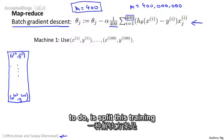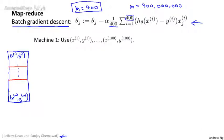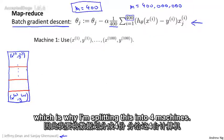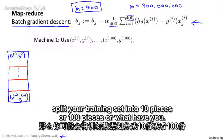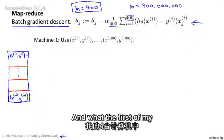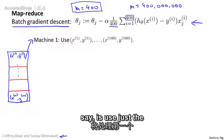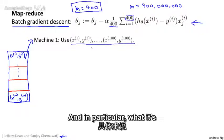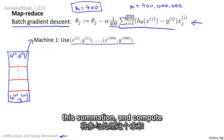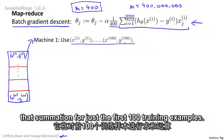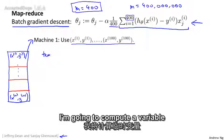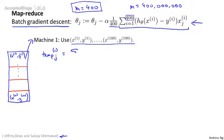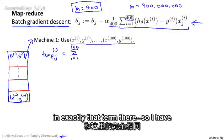In the MapReduce idea, I'm going to split this training set into different subsets. I'm going to assume for this example that I have four computers or four machines to run in parallel on my training set, which is why I'm splitting this into four pieces. If you have 10 or 100 machines, you would split your training set into 10 or 100 pieces. What the first of my four machines is going to do is use just the first one quarter—the first 100 training examples—and compute that summation for just those first 100 training examples. I'm going to compute a variable temp superscript 1 (the first machine): j equals sum from i equals 1 through 100 of exactly that term.